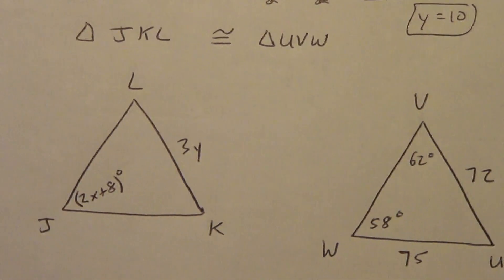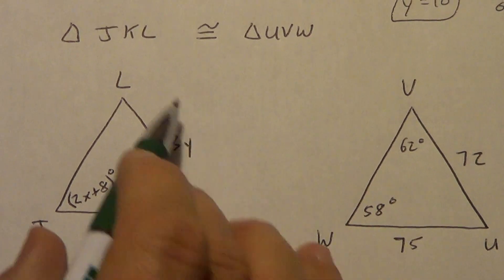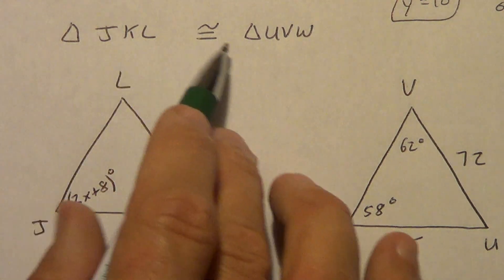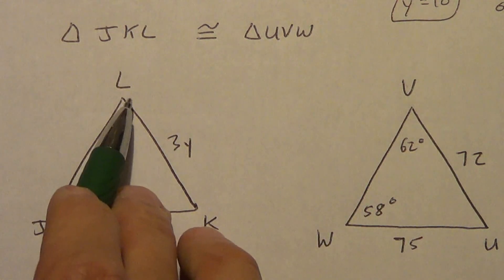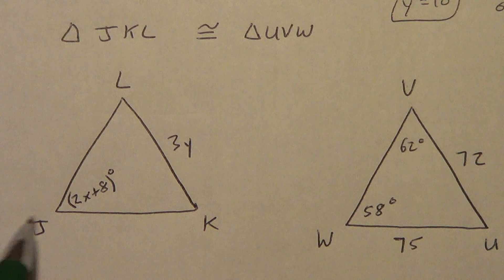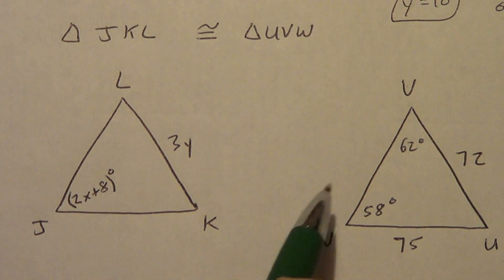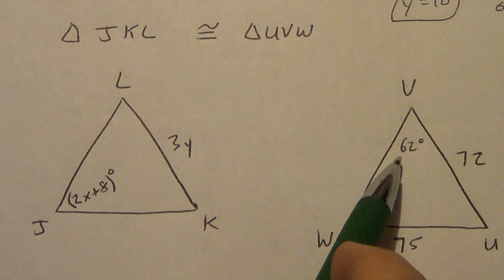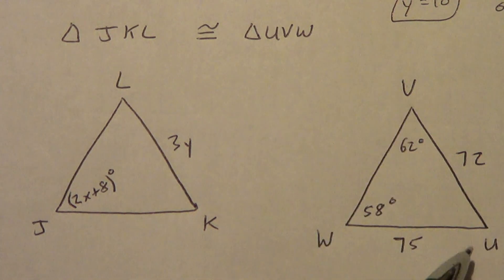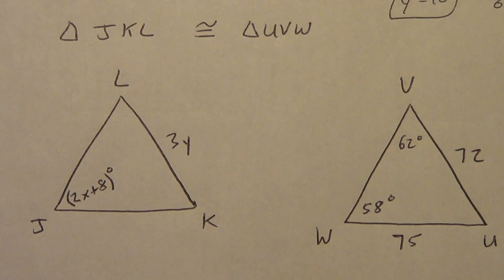Alright. I want you to do this one. So, angle J, K, L is congruent to angle U, V, W. We have L, J, and K here. We have a 3y. 2x plus 8. A 58, a 62. A W, a V, and a U. And a 72 and a 75. So, go ahead. Pause. Copy it down. Solve it. And then come back and check your answers.